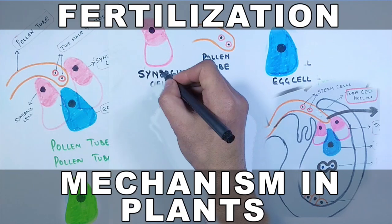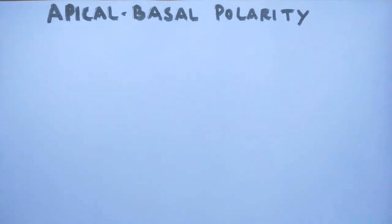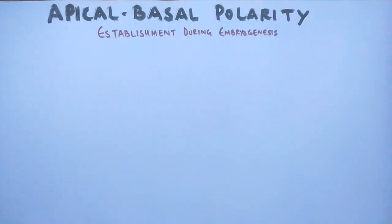In the previous video we discussed the fertilization mechanism in plants. Now in this video we'll be discussing apical-basal polarity in plants. This is established during the embryogenesis of plant within the zygote.